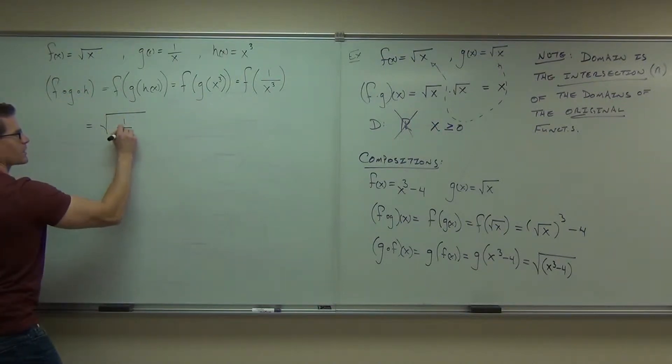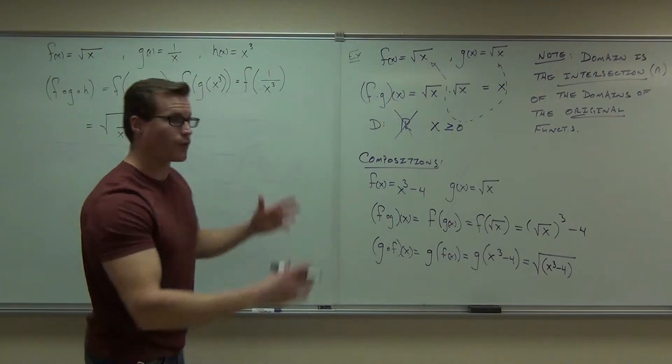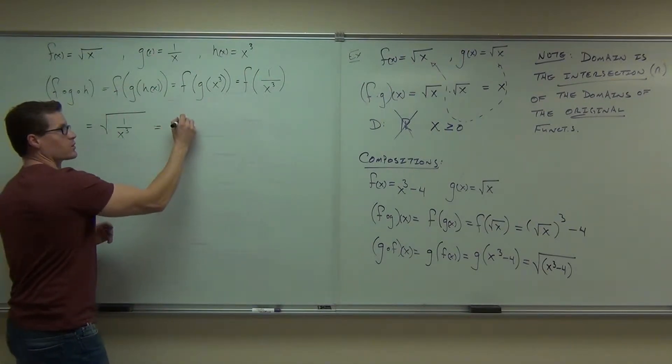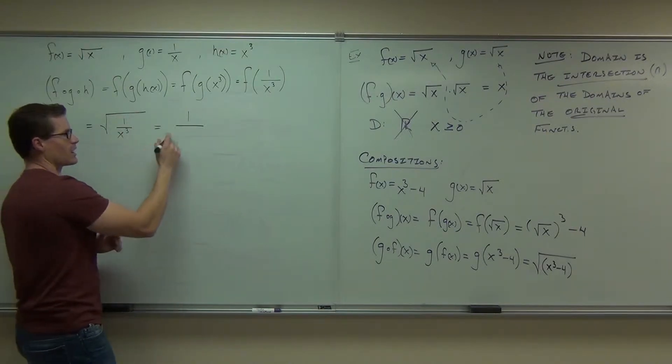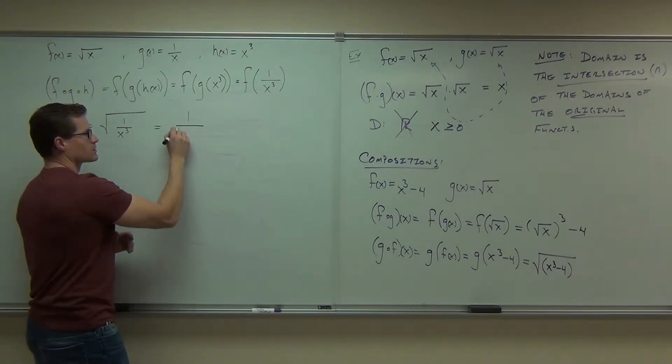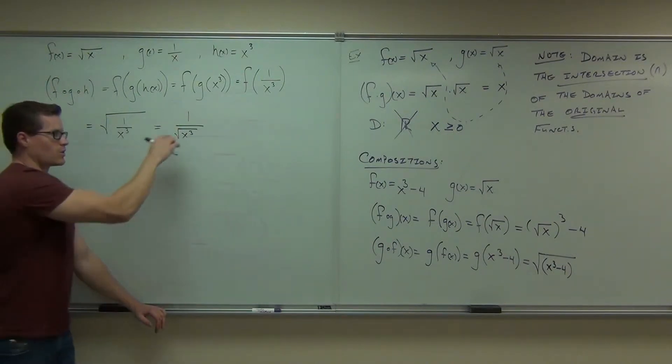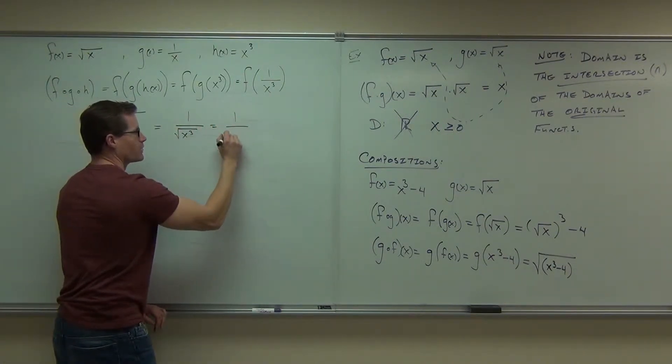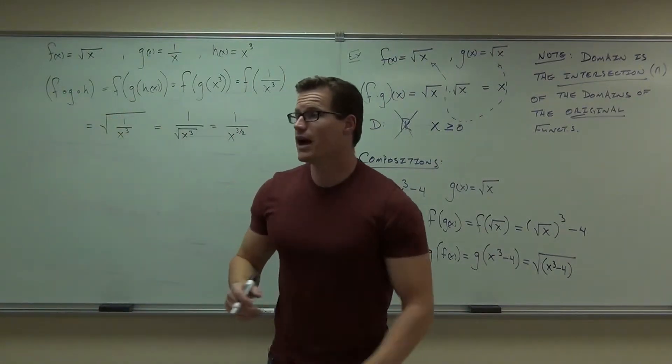Your parentheses is 1 over x cubed. Or if you want to be fancy about it, the square root of 1 is 1, x to the 1 half power, so that would be the square root of x cubed like this. Do you agree? And you can write that as well as 1 over x to the 3 halves power. Remember those fractional exponents power over root? You can do that.